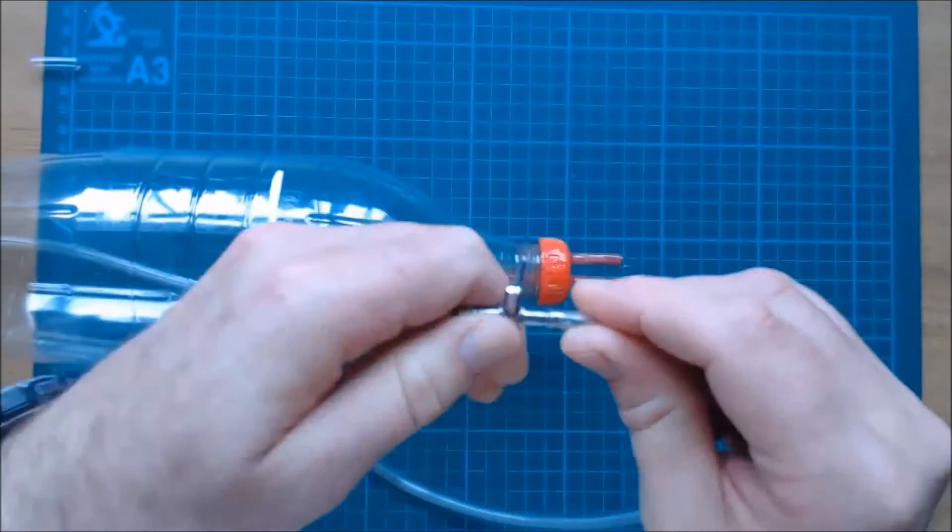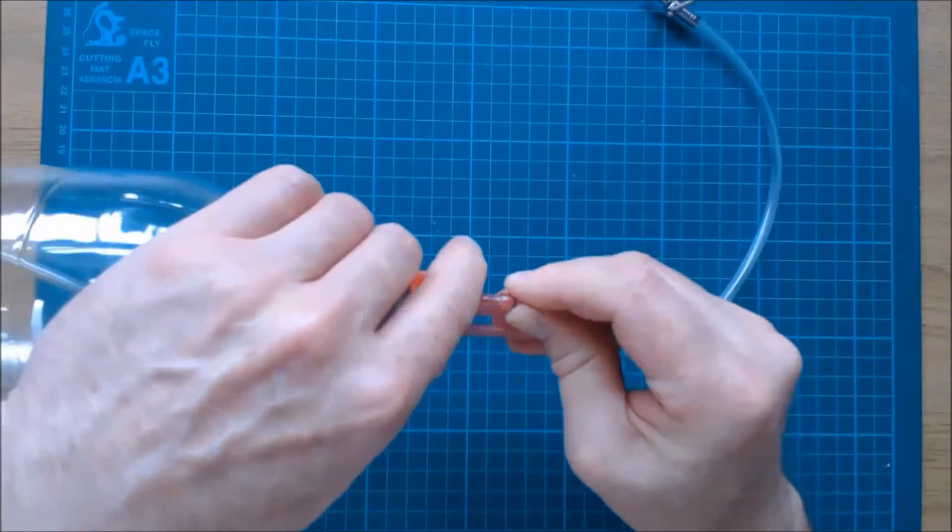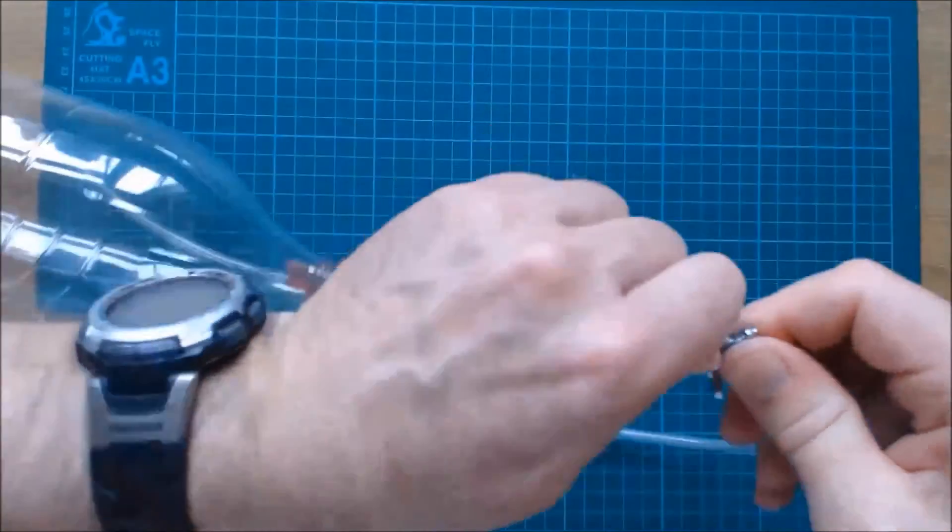Cut a length of pipe and push it onto the tap, and then push the other end onto the short straw of the first soda bottle. Push another length of pipe onto the other end of the tap.